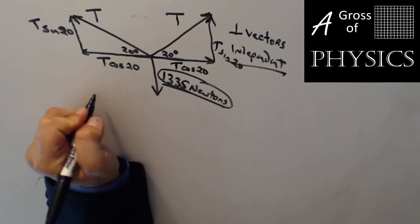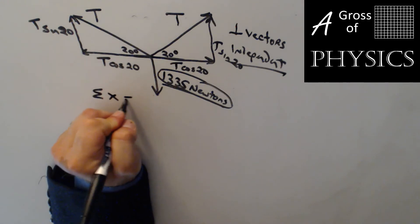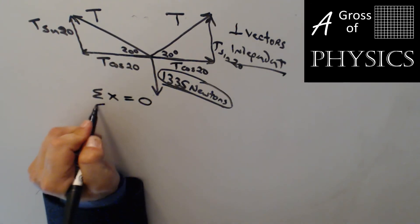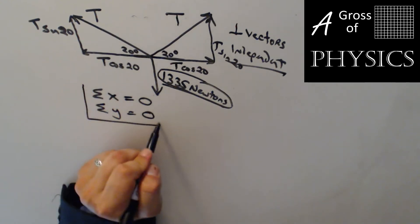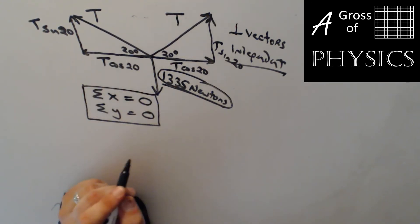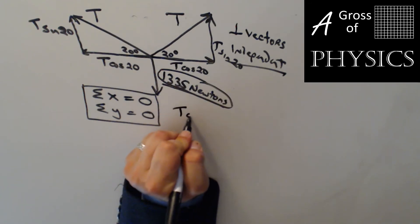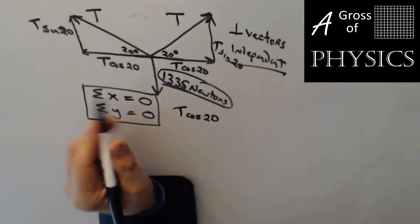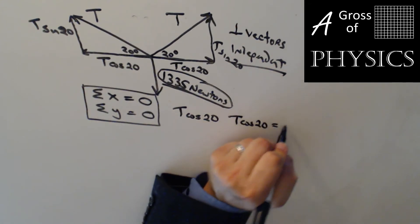So equilibrium problems are solved like this. You sum up all the x vectors and set it equal to zero. You sum up all the y vectors and set it equal to zero. And then you'll have two equations and you can solve for two unknowns with that. Now in the x direction we have a t cosine 20 and we have another t cosine 20 and they equal zero.